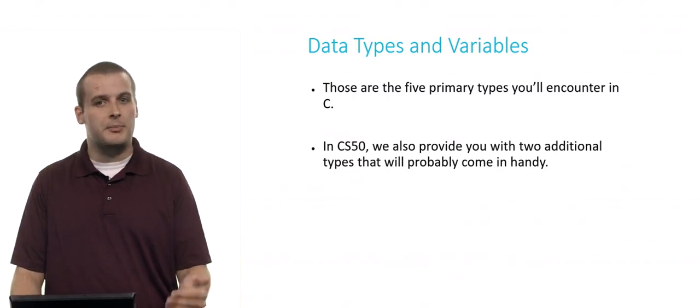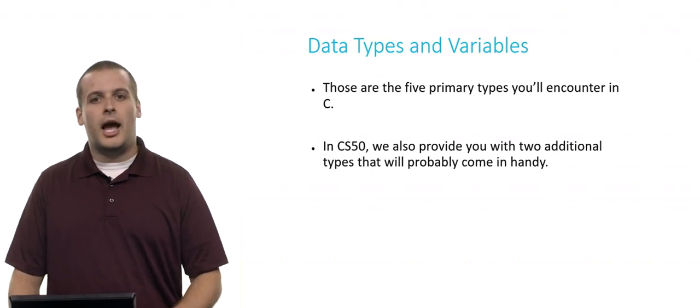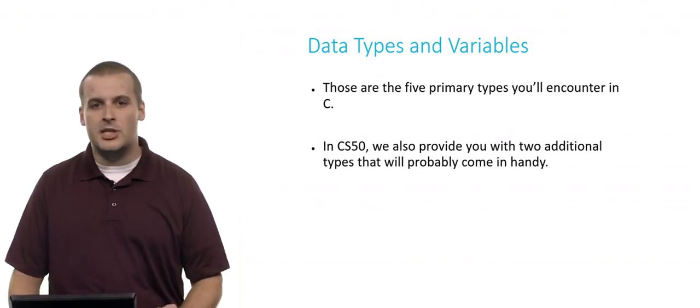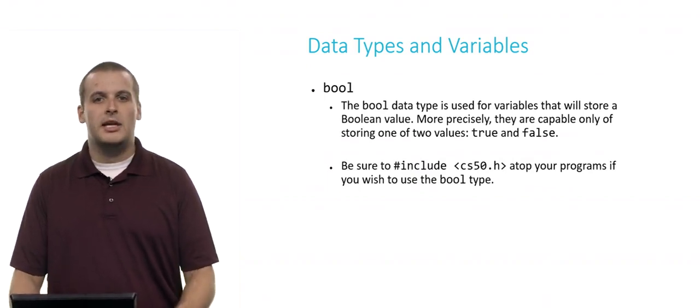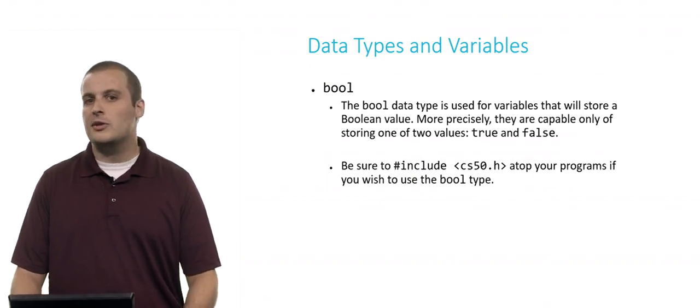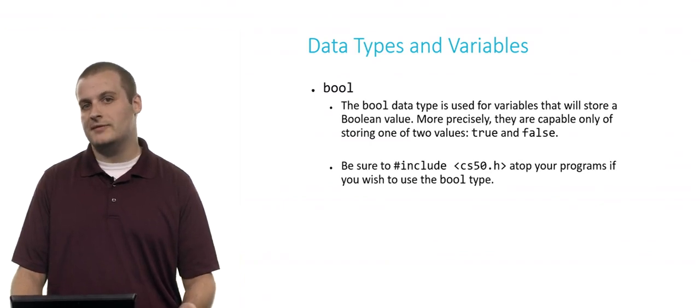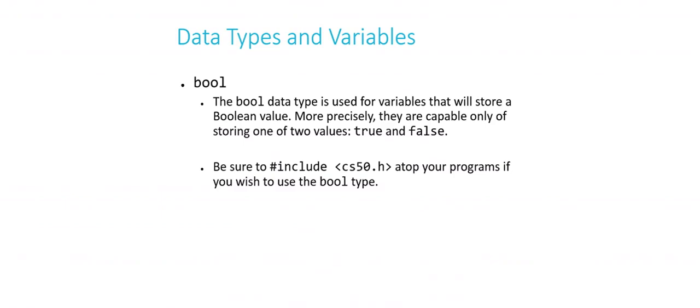All right. So those are the five types that you'll encounter that are built into C. But in CS50, we also have a library, CS50.h, which you can include and which will provide you with two additional types. The first of these is bool. So the Boolean data type, bool, is used for variables that will store a Boolean value. If you've ever heard this term before, you might know that a Boolean value is capable of only holding two distinct values, true and false. Now this seems pretty fundamental, right? It's kind of a surprise that this doesn't exist in C as it's built in. And in many modern languages, of course, Booleans are a standard default data type. But in C, they're actually not. But we've created it for you. So if you ever need to create a variable whose type is bool, just be sure to pound include CS50.h at the beginning of your program. If you forget to pound include CS50.h and you start using Boolean type variables, you might encounter some problems when you're compiling your program.